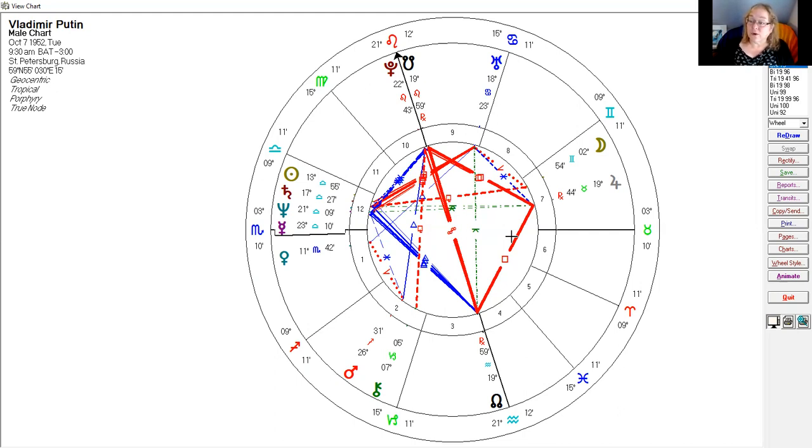His North node is in Aquarius, meaning that he needs to move in the direction of the common good. And actually with this type of chart, had he decided to come from a better place, I think he would have been quite a benefit to Russia and to the world. However, that is not what he chose to do. There is definitely an energy here around revenge and wounded Pluto in Leo is narcissistic.